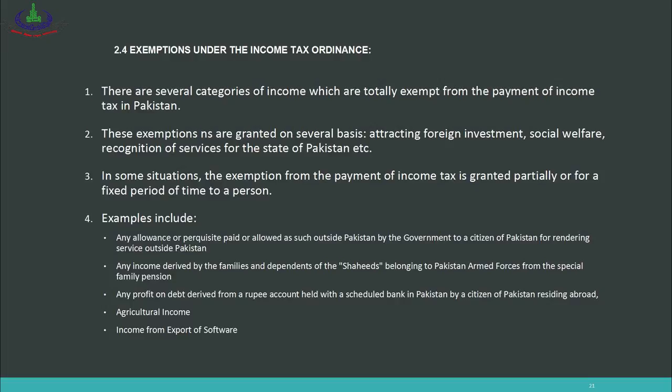This completes Unit Number 2, in which we discussed four topics: Federal Board of Revenue and its authorities; assessment of income and its different methods; income tax return filing requirements; and lastly income tax exemptions. Please study all these topics further from your book, and if you have any questions, you can ask on the online portal. Allah Hafiz.